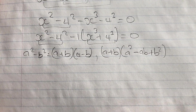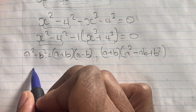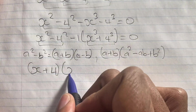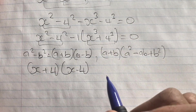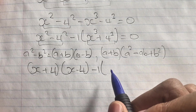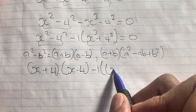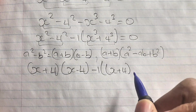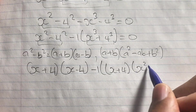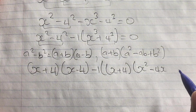Applying these formulas: the difference of two squares x squared minus four squared expands to (x + 4)(x − 4). Then, minus one times the sum of two cubes x cubed plus four cubed expands to minus one times (x + 4)(x squared minus 4x plus four squared), which is x squared minus 4x plus 16.